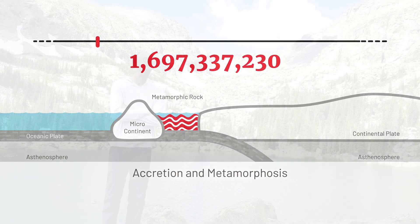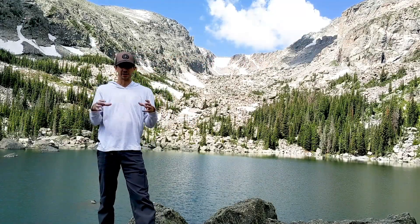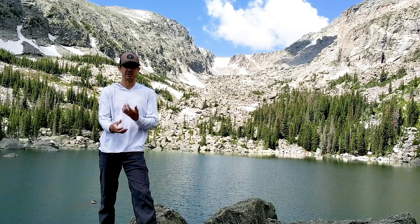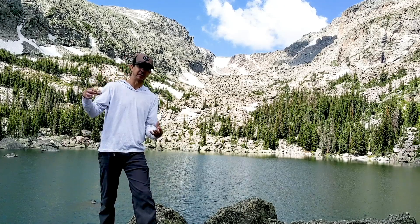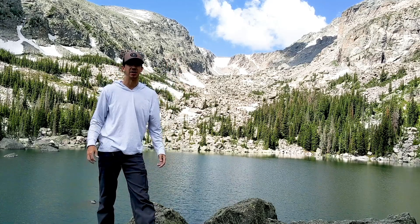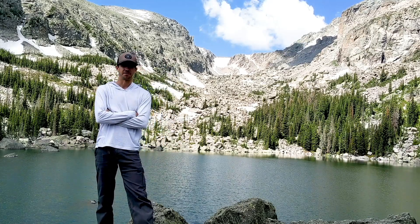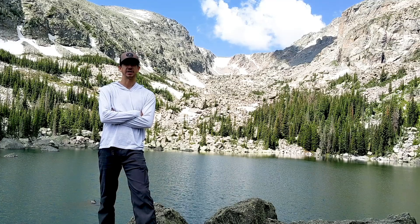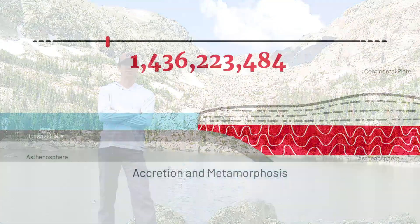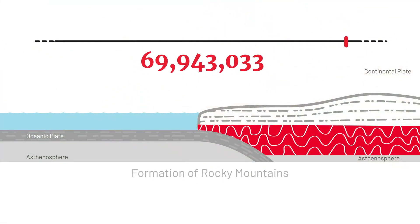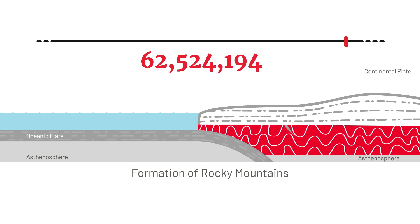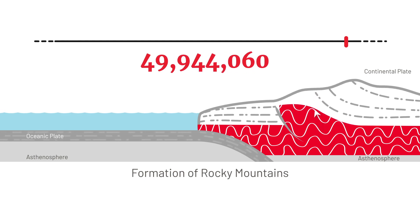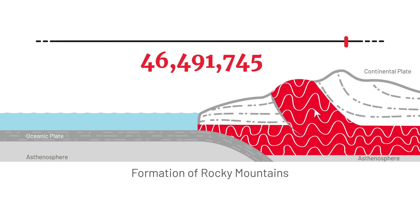The next step you're probably wondering about is: okay, you had tectonic convergence and metamorphism, but metamorphism typically occurs very deep in the subsurface — which was the case here. How did these rocks go from being really deep underground to now being at the tops of mountains that are over 12,000 feet above sea level? Well, it's once again through another episode of tectonic convergence. This later episode occurred starting around 70 million years ago, where a subducting plate subducted beneath what is now California.